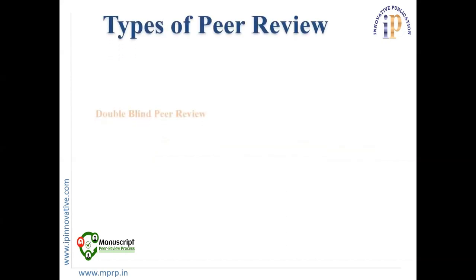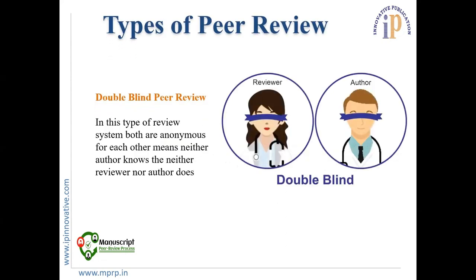Types of Peer Review. 1. Double Blind Peer Review: In this type of review system, both the author and the reviewer are not known to each other. As you can see in the picture, the reviewer as well as the author cannot see each other — they don't know each other's identity.